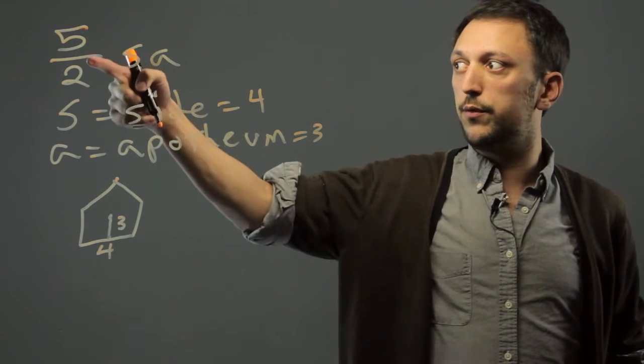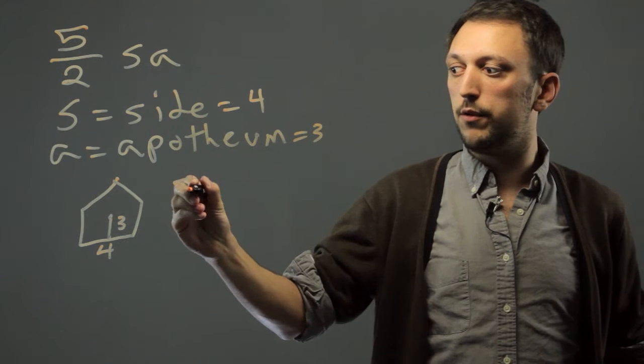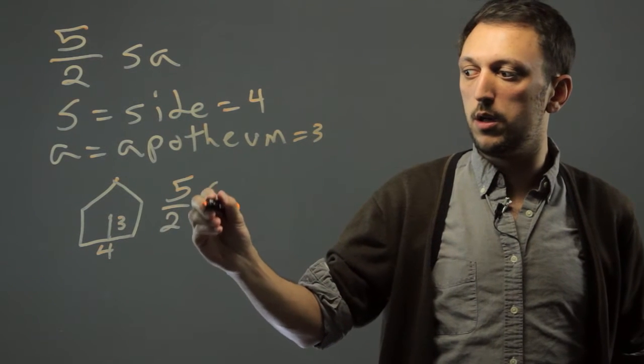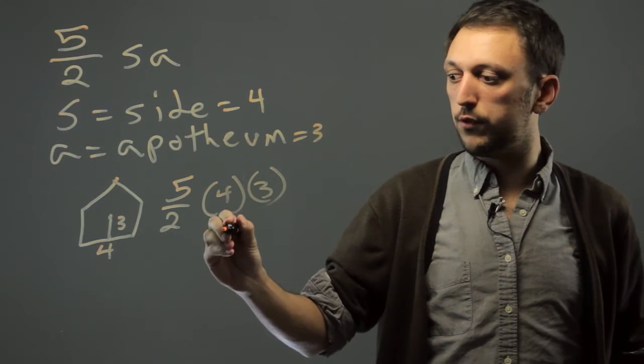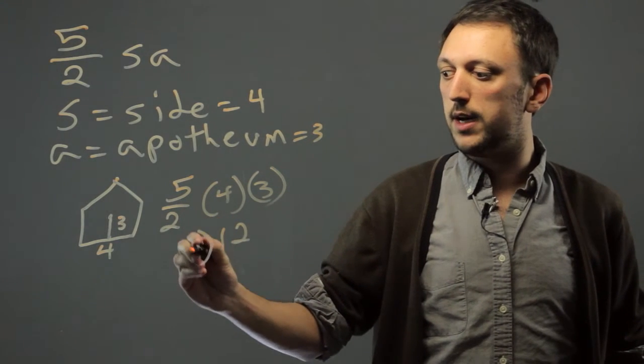So we would do 5 over 2 times 4 times 3. 4 times 3 is 12 times 5 over 2. Now a nice trick for multiplying 5 over 2,